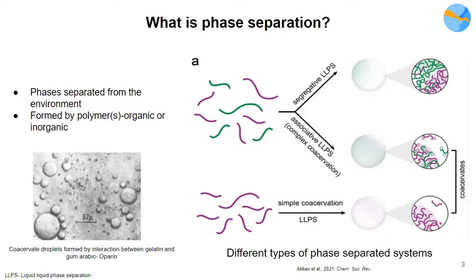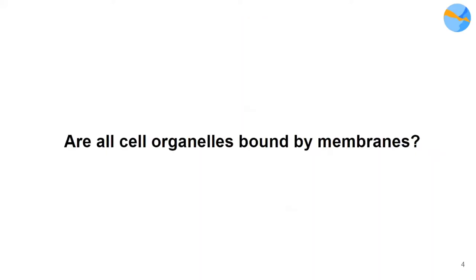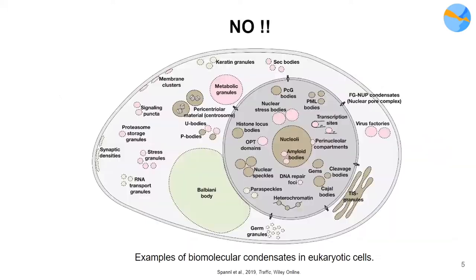Something that should be noted is that biomolecules and polymers can basically segregate or encapsulate themselves out of the environment without the presence of a membrane, which brings me to the question: are all cell organelles bound by membrane? The short answer is no. Contrary to popular belief, we have a lot of organelles in our cells which are not bound by any membrane. This is an image of a eukaryotic cell, and as you can see here, many organelles indicated by dashed lines are membraneless.